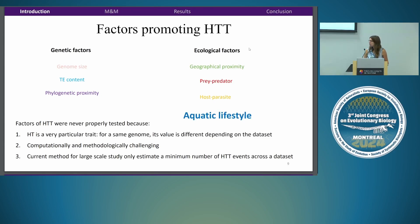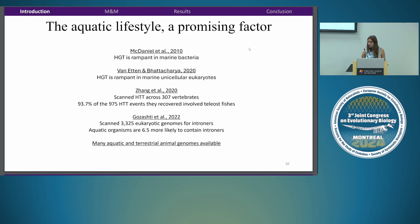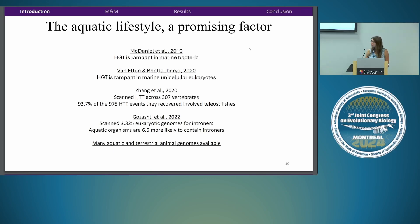During my PhD, we were able to study the factor of aquatic lifestyle. We chose this factor because it was quite promising: horizontal gene transfer is rampant in marine bacteria and marine unicellular eukaryotes. For vertebrates, one study estimated that about 93% of HTT events recovered in a vertebrate dataset involved teleost fish. And more recently, Gossard et al. scanned more than 3,000 eukaryotic genomes and found aquatic organisms were 6.5 times more likely to contain introners — transposable elements that become introns. We also now have many aquatic and terrestrial animal genomes on NCBI.